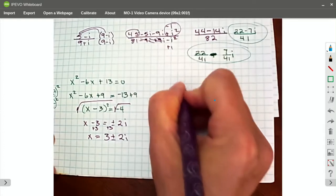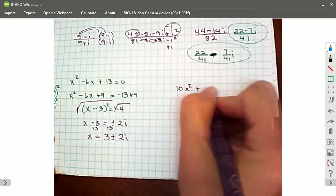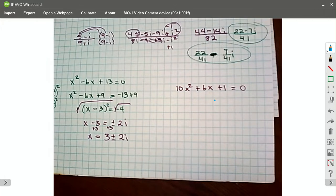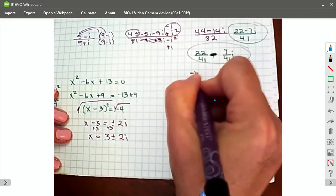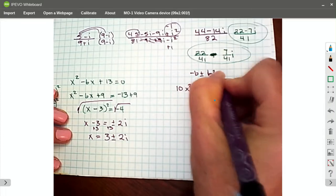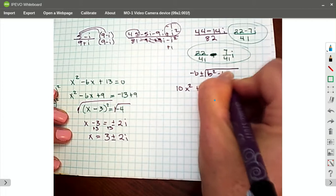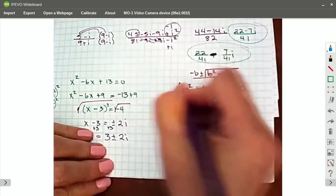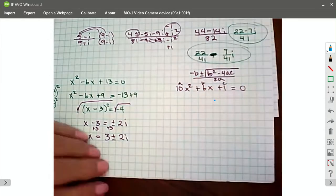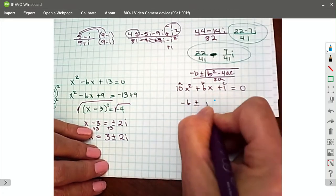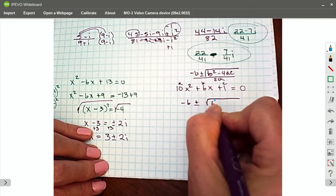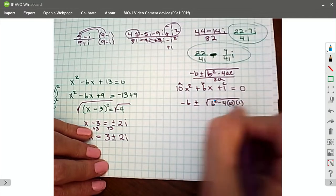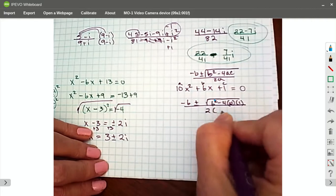What if I had 10x squared plus 6x plus 1 equals 0? Let's use the quadratic formula. Remember, that is negative b plus or minus b squared minus 4ac over 2a. So this is my a, my b, and my c. So I've got negative 6 plus or minus the square root of 6 squared minus 4 times 10 times 1 over 2 times 10.